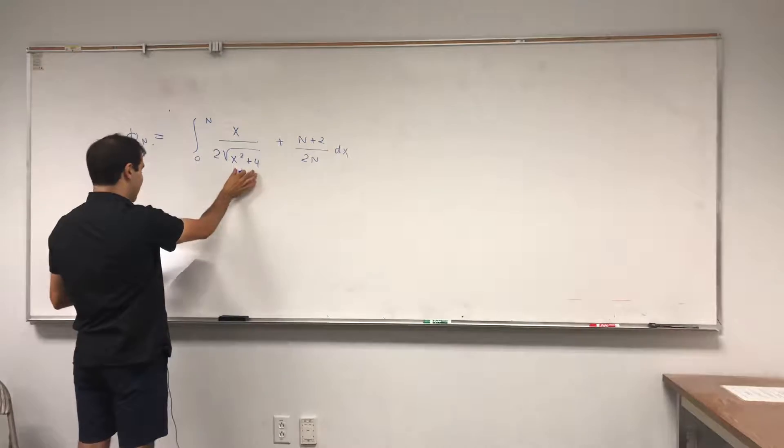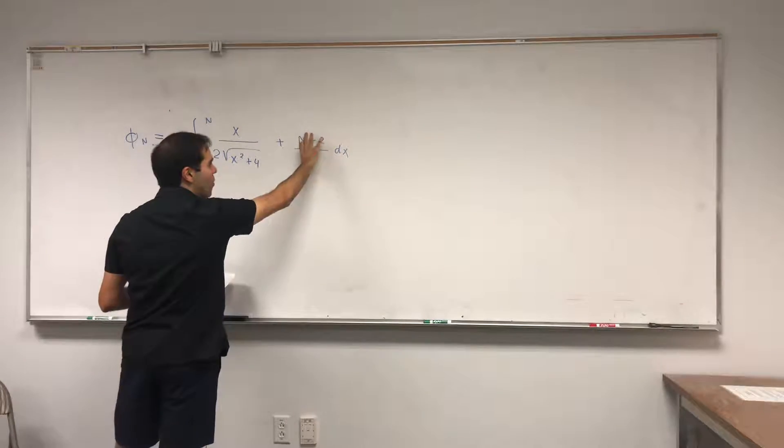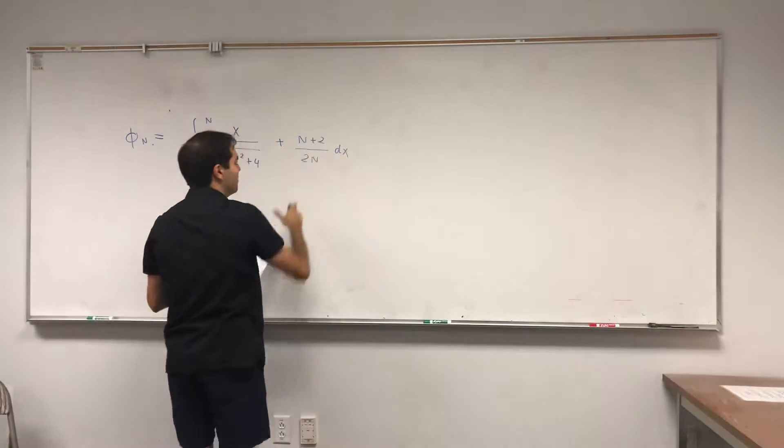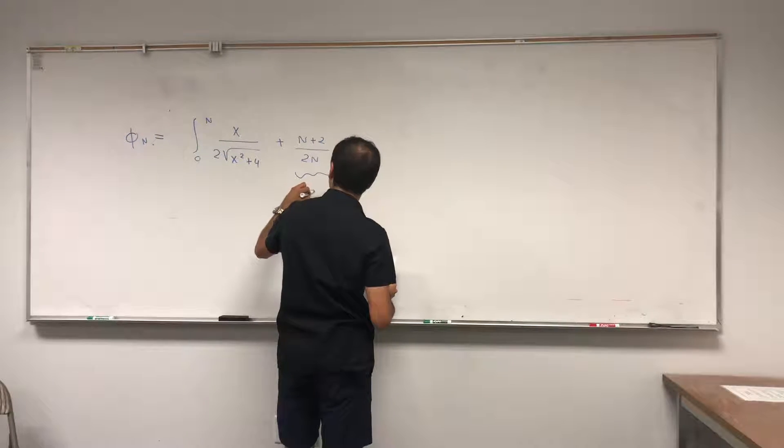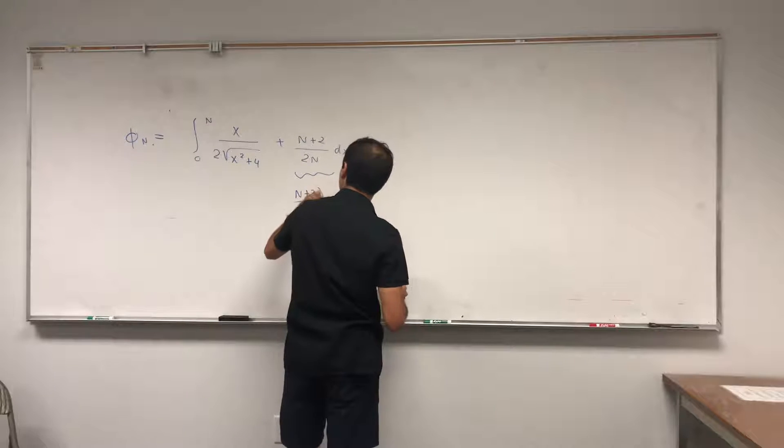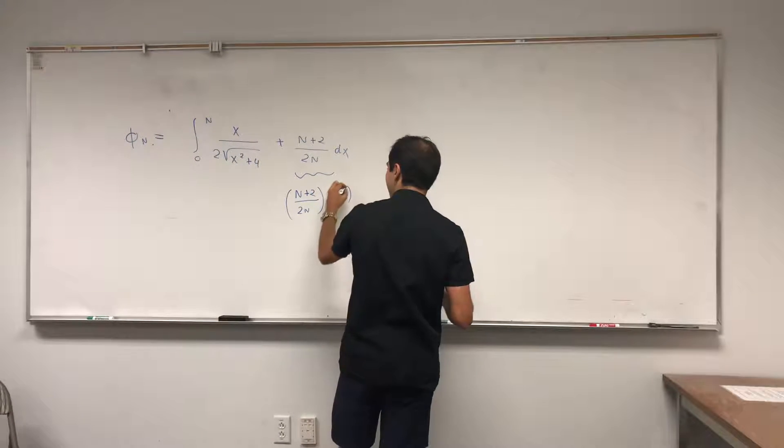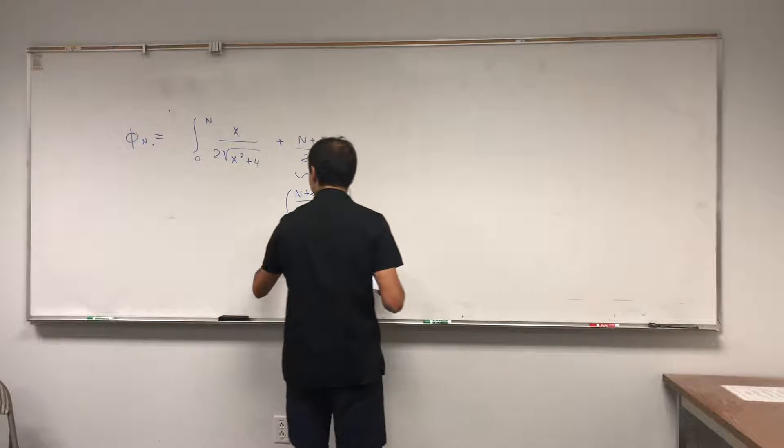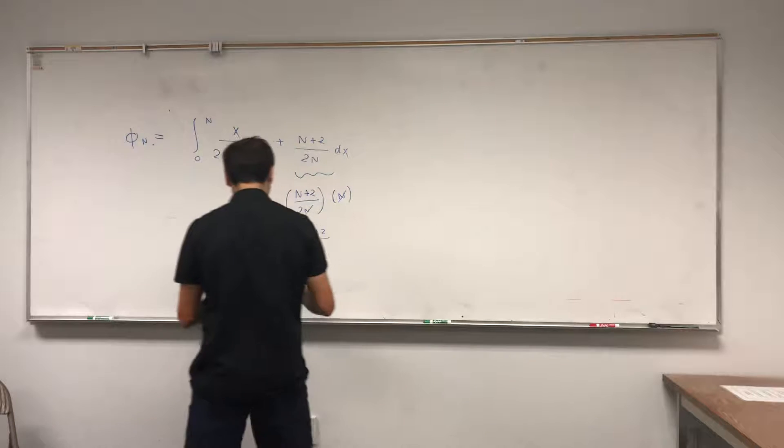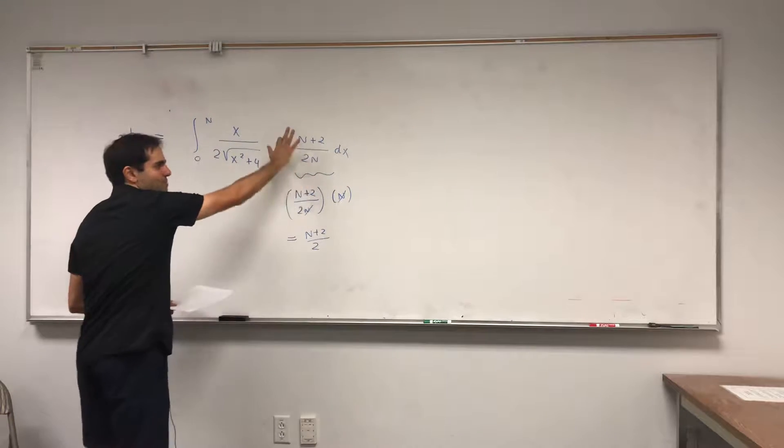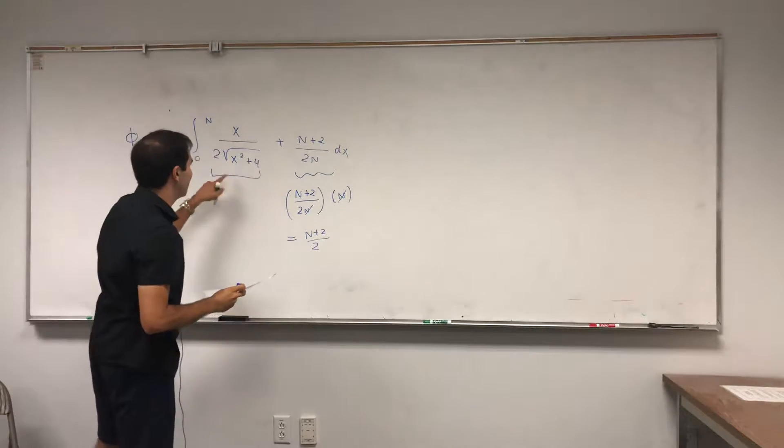Okay, how do you solve this? Well first of all it's made out of two parts. This part is just a constant, so if you integrate that you get n plus 2 over 2n times n minus 0, so times n. This cancels out and you basically get n plus 2 over 2. So from now on we won't worry about this part but we'll worry about this part.